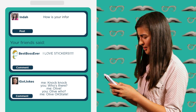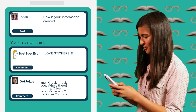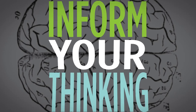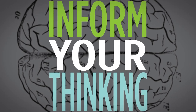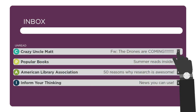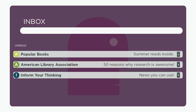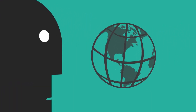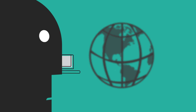How is your information created? Information is literally everywhere. We've got social media, commercials, academic articles, weird conspiracy theories my uncle sends me, and on and on and on. We have the ability to create and share information in a split second and send it out to the world.